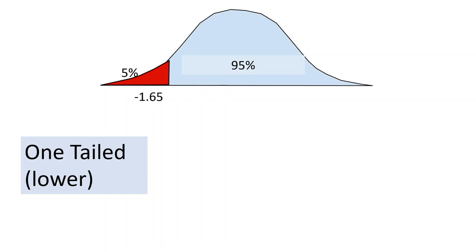So our rejection region would be defined as any score negative 1.65 or less. And so this is a one-tailed test, but it's a lower-tailed test. Again, we've maintained our alpha at 5%, but now we're looking at questions that direct us to look on the lower tail only.